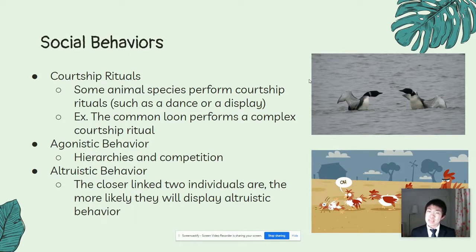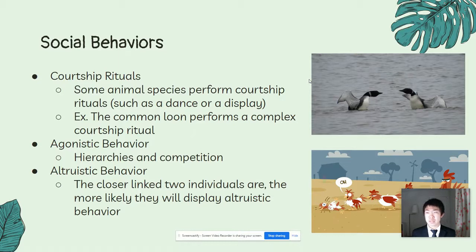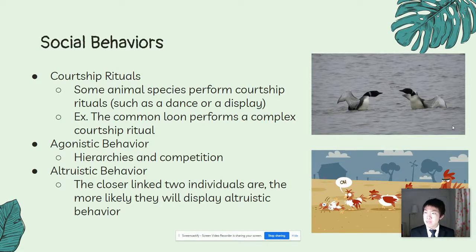Social behaviors are something we could easily write volumes upon, but we'll just be looking at the most common three. The first is the courtship ritual. The courtship ritual is another way that animals of a species recognize that they are of the same species and whether or not they are fit to reproduce. For example, this picture of the common loons shows them doing a courtship ritual, through which they decide if they are part of the same species and whether they are fit to reproduce.